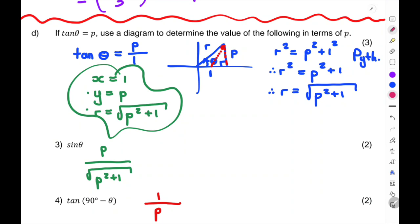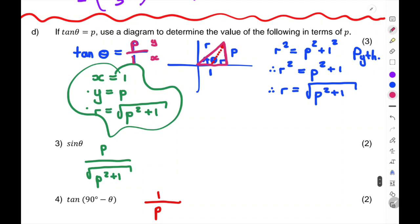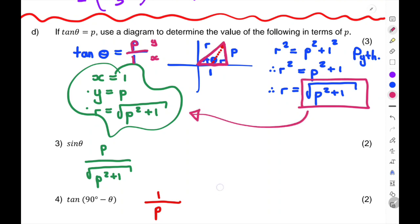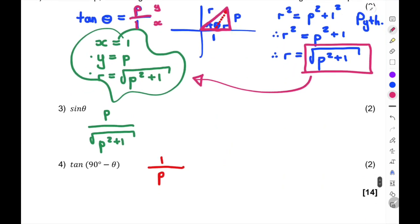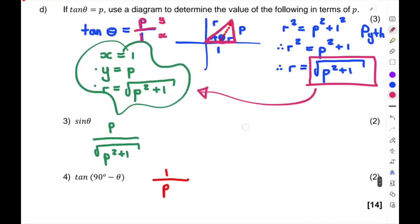If tan theta = P, use a diagram to determine values in terms of P. Put P over 1. Draw your diagram in the first quadrant. Using SOH-CAH-TOA: Y = P, X = 1, then find R using Pythagoras. Set up your X, Y, R summary and then replace in your answers in terms of P.